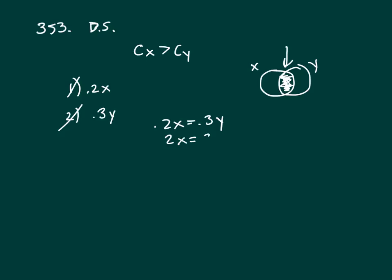Let's get rid of our decimals by multiplying both sides by 10. And so let's divide both sides by 3. So that gives us 2/3 X equals Y. Now divide both sides by X. 2 over 3 equals Y over X.